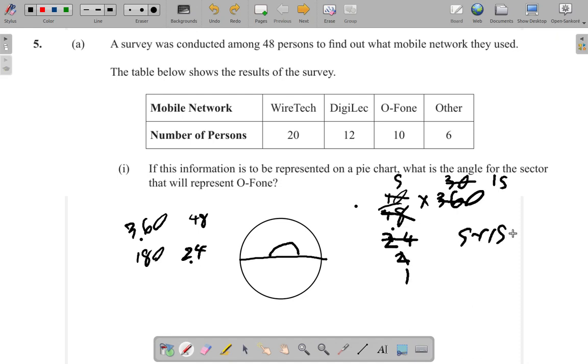So here, if this information is represented on a pie chart, what is the angle for the sector? It would be 75 degrees. Because it's 10 out of the full 48 times 360 gives you 75 degrees.